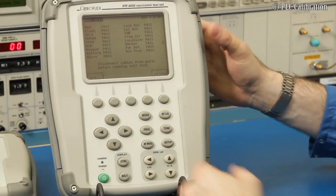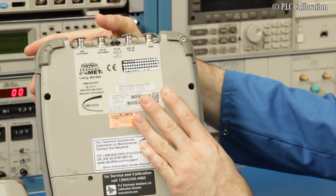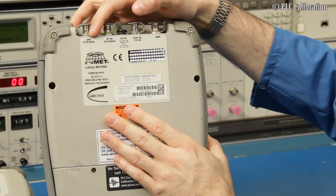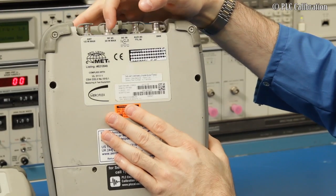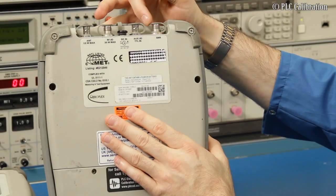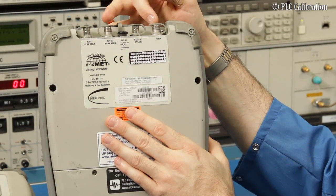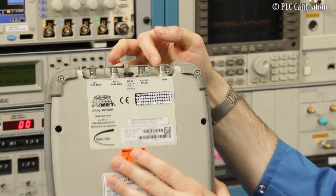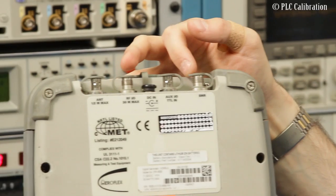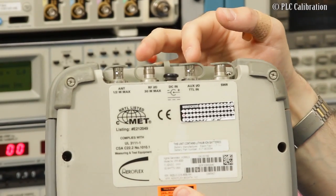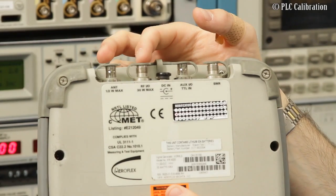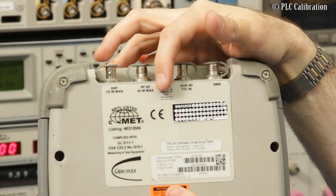Now one thing to note, and it says right on the back of the unit here, is the antenna port. It actually tells you how much power you can put in max for the different units on the back here. So SWR, you should never be putting RF power into SWR. That's only for checking antenna connections and cables for an SWR sweep. Auxiliary IO TTL in, you're not putting RF into there. RF IO, that's where you can do the 30 watts max, as it says here.